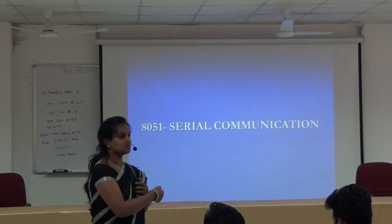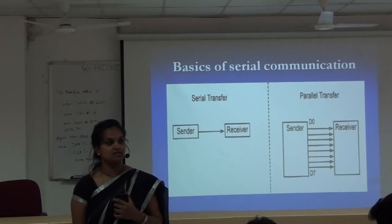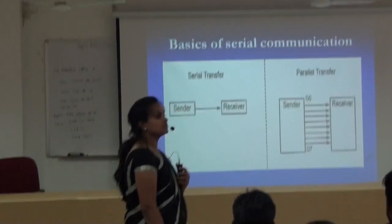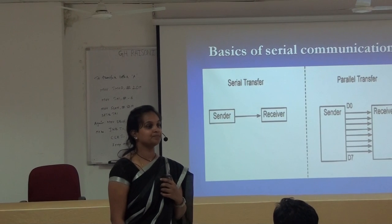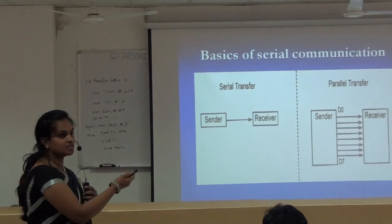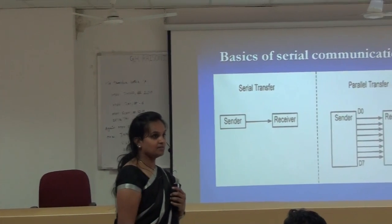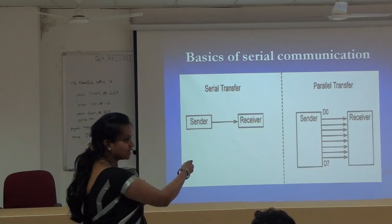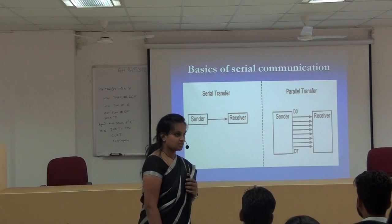What type of communication does the microcontroller support? We will discuss about it. Before going into detail about serial communication, first we will begin with types of communication. There are two types: serial communication and parallel communication. Serial communication means one by one; parallel means simultaneous. This diagram clearly explains the difference between serial and parallel communication.